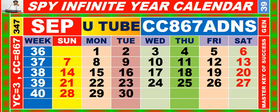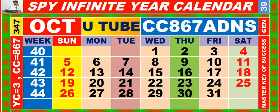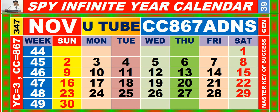Calendar for the month of September, having calendar code equal to 8, 6, 7. Calendar for the month of October, having calendar code equal to 8, 6, 7. Calendar for the month of November, having calendar code equal to 8, 6, 7.